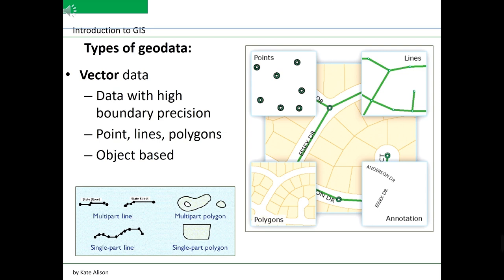First of all, let's talk about vector data. Vector data consists of vertices and paths. The three basic types of vector data are points, lines, and polygons or areas. Each point, line, and polygon has a spatial reference frame such as latitude and longitude.